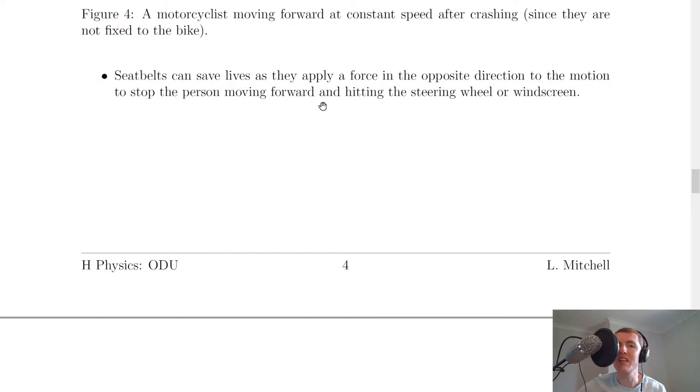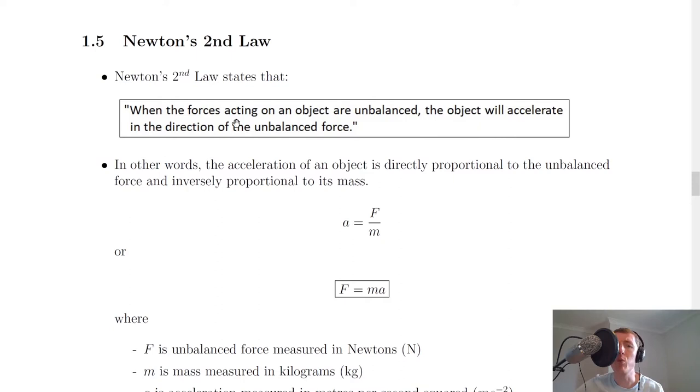And just a wee bit on how the seatbelts work, it says that seatbelts can save lives as they apply a force in the opposite direction to the motion to stop the person moving forward and hitting the steering wheel or windscreen.